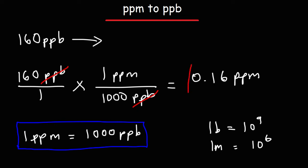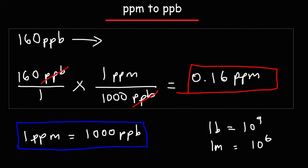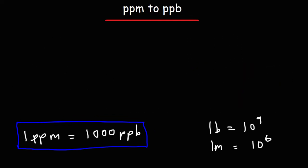And so that's how you can convert from ppb to ppm. So let's summarize what we've just considered here. If we want to go from ppm to parts per billion, we need to multiply by 1,000. If we wish to go backwards, that is from parts per billion to parts per million, then we need to divide by 1,000.